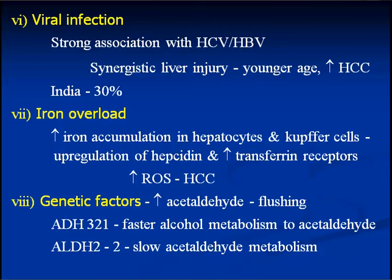These individuals develop liver disease at a younger age and are more likely to develop hepatocellular carcinoma. In India, almost 30% of alcoholics coming with liver disease have associated hepatitis C infection. Iron overload also increases the chances of liver disease in alcoholics, and genetic factors are also considered important. The toxin is acetaldehyde, so metabolism of alcohol into acetaldehyde is important — the faster the metabolism into acetaldehyde and the slower the metabolism of acetaldehyde into acetate, these are the individuals likely to get liver disease, governed by alcohol dehydrogenase ADH and acetaldehyde dehydrogenase ALDH2.